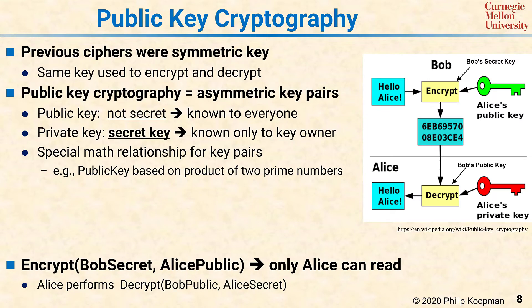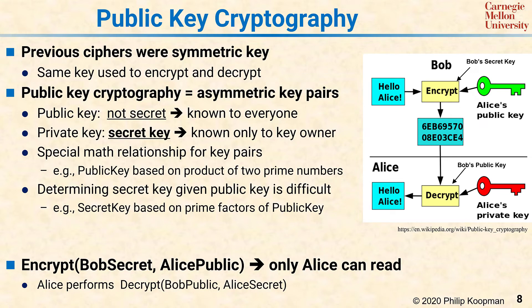At a high level, the simple version is you could have a public key based on the product of two prime numbers. Bob picks two prime numbers — both secret — multiplies them together, and gives the product as his public key. It turns out that factoring really large numbers into prime factors is computationally infeasible, so he can publish that public key and no one will have the computational power to figure out his secret prime factors.